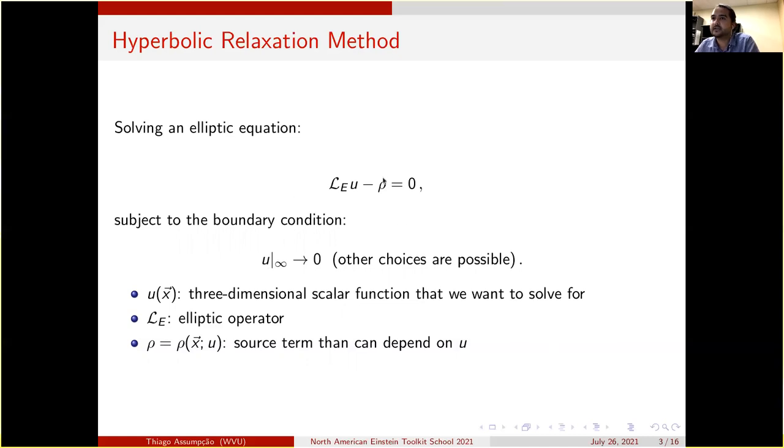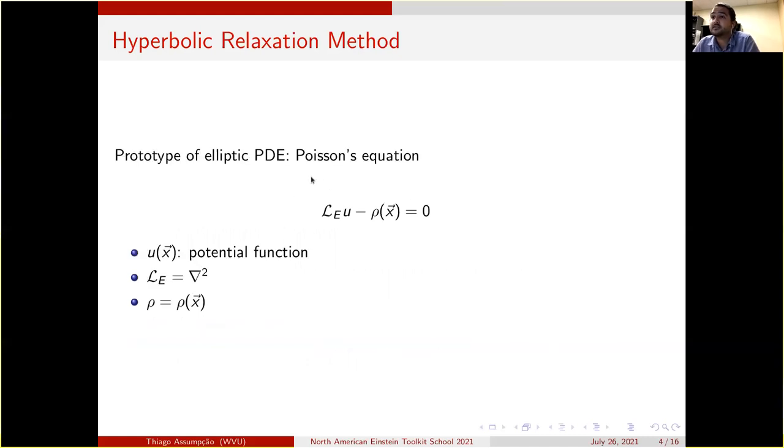For instance, Poisson's equation is the elliptic equation. In this case, u is a potential, the elliptic operator is the Laplacian operator, and rho is a density.